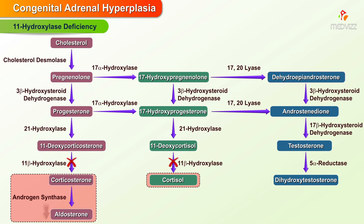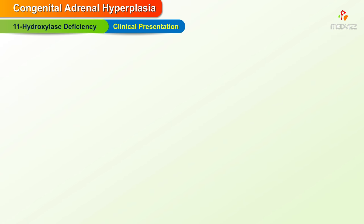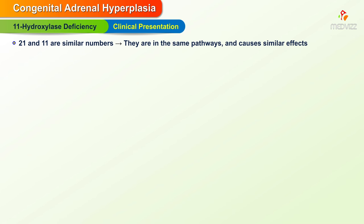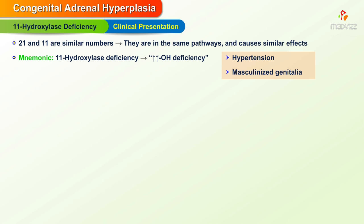The deficiency leads to decrease in aldosterone, decrease in cortisol, increase in androgens, and increase in 11-deoxycorticosterone, which is a weak mineralocorticoid. Clinically, it presents with hypertension and ambiguous female genitalia from excess androgens. Note: 21 and 11 are similar numbers, so they are in the same pathways and cause similar effects. 11-hydroxylase deficiency can be remembered with a mnemonic featuring up arrows representing hypertension and masculinized genitalia.